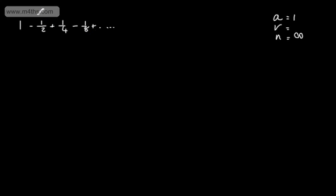So if I divide -1/2 by 1 I get -1/2. If I divide 1/4 by -1/2 I get -1/2. If I divide -1/8 by 1/4 I get -1/2. So we can see that this will work for the sum to infinity as the modulus of the ratio is going to be less than 1.